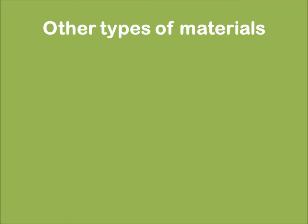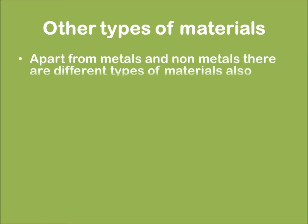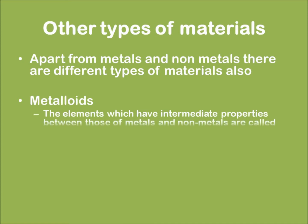Apart from metals and non-metals, there are actually other types of materials also, which are called metalloids. A metalloid is an element which has the intermediate properties of a metal and a non-metal.